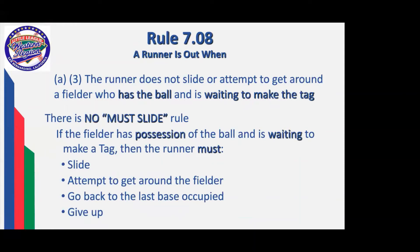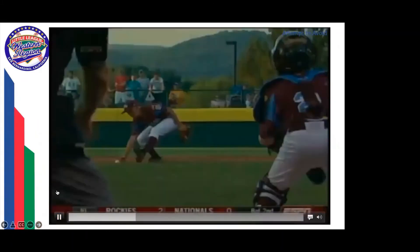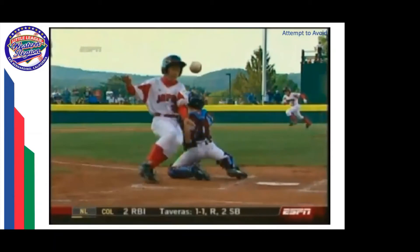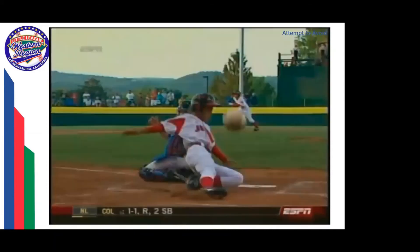Over and over again we'll see: there is no must-slide rule. If a fielder has possession of the ball and is waiting to make a tag, the runner must slide, attempt to get around, go back to the last base occupied, or give up and be tagged. This example is about as good as you can get of a runner attempting to avoid. You'll see that his arm goes around, circles in, he comes through and tags the plate. Rather than destroying the catcher, that runner made a very good effort to attempt to avoid.